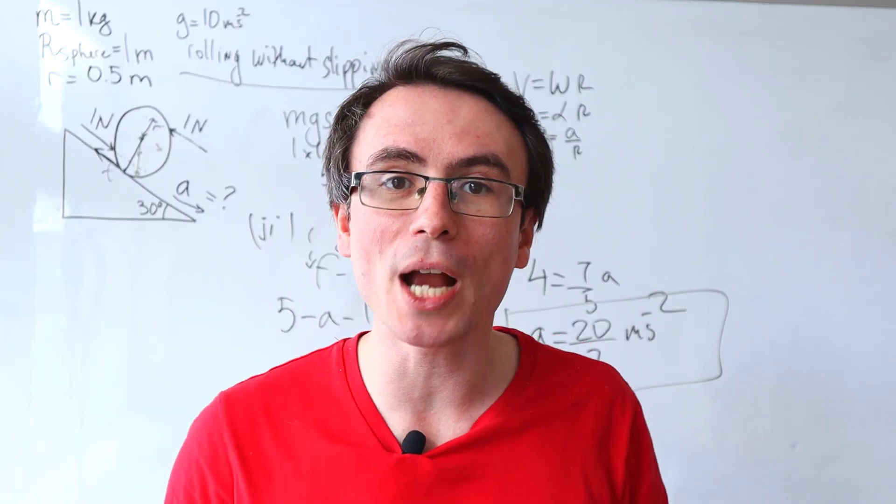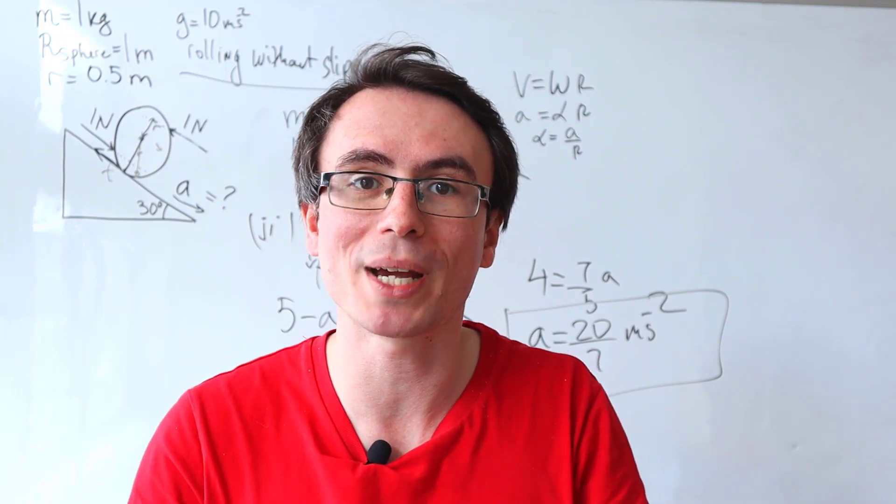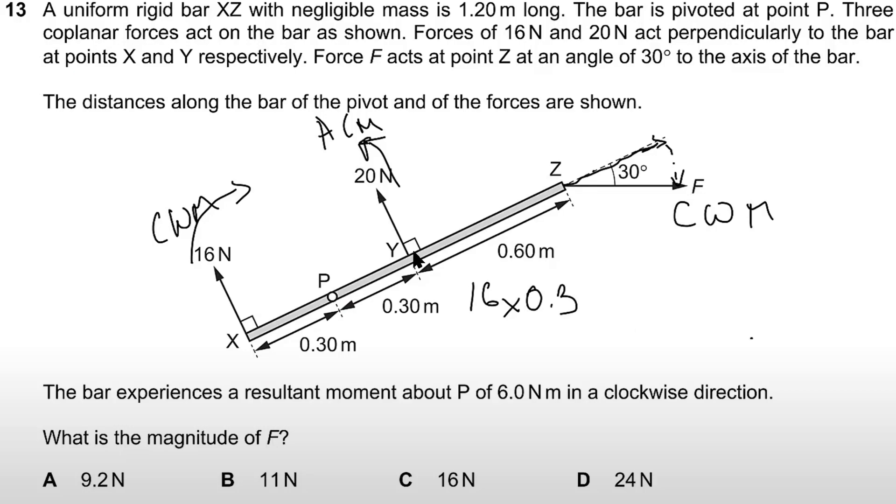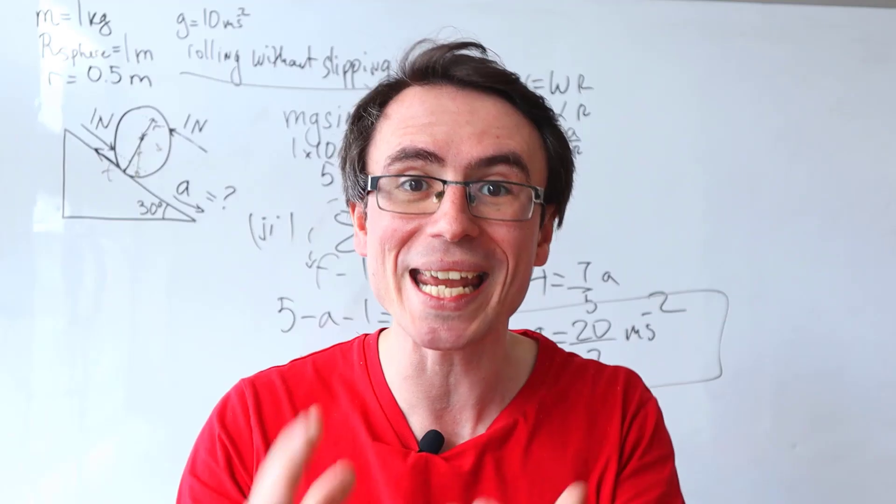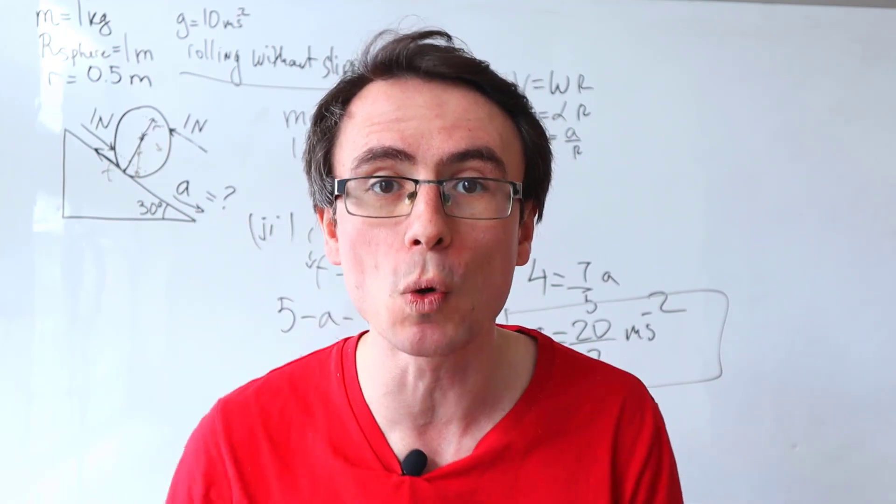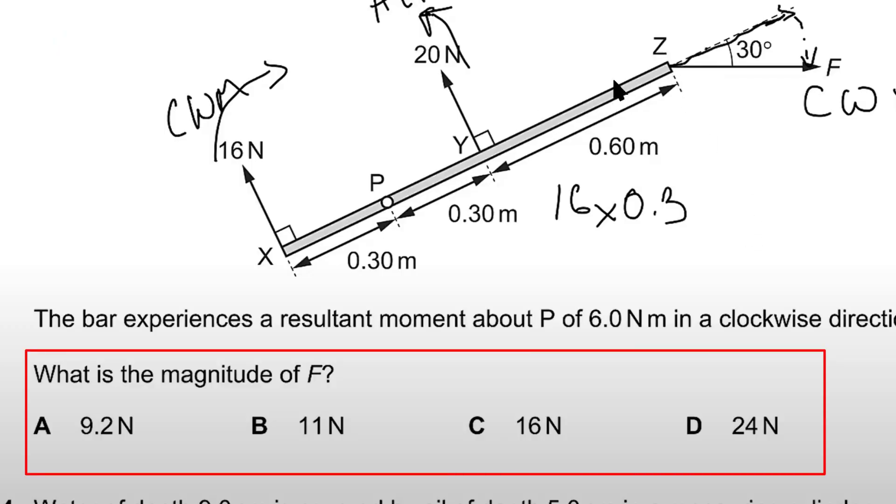Be really careful with diagrams, especially in multiple choice questions. For instance, if you're trying to calculate a moment and the distance to the pivot, if you take the wrong distance, chances are that the wrong distance will correspond to a wrong answer.